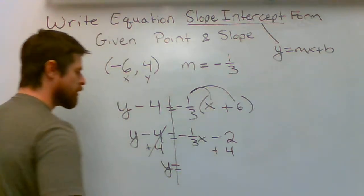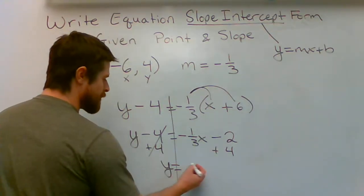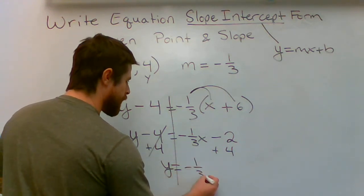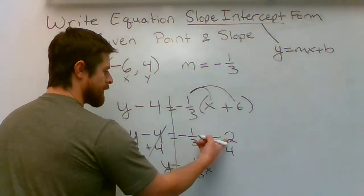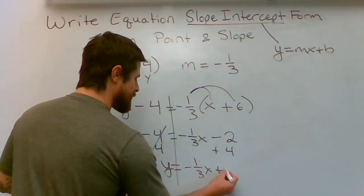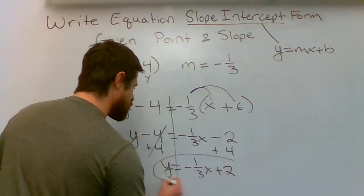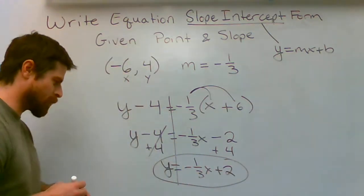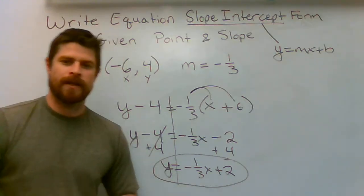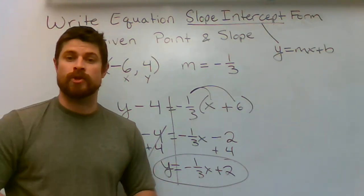We're going to add it to the negative two. We're going to now have Y equals negative one-third X. Negative two plus four is positive two. Circle it because you've done a lot of hard work and you're at the end. Well done. Y equals negative one-third X plus two.